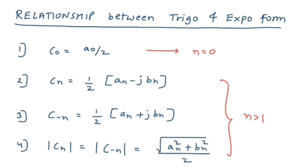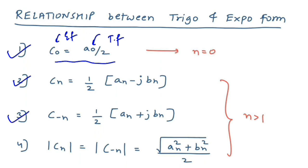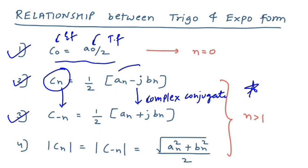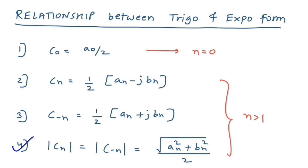Now let us see the relationship between the trigonometry form and the exponential form of the Fourier series. First, c₀ = a₀/2. Second, cₙ = (1/2)(aₙ − jbₙ) and c₋ₙ = (1/2)(aₙ + jbₙ). This means cₙ and c₋ₙ are complex conjugates of each other — a very important point that GATE questions are based on. Fourth, |cₙ| = |c₋ₙ| = √(aₙ² + bₙ²) / 2.